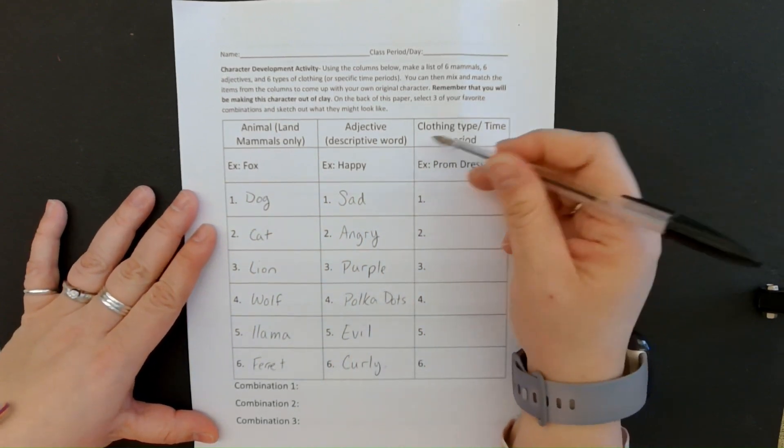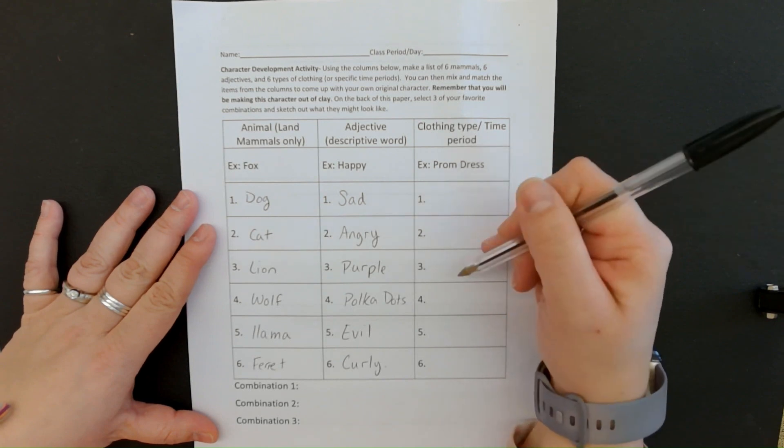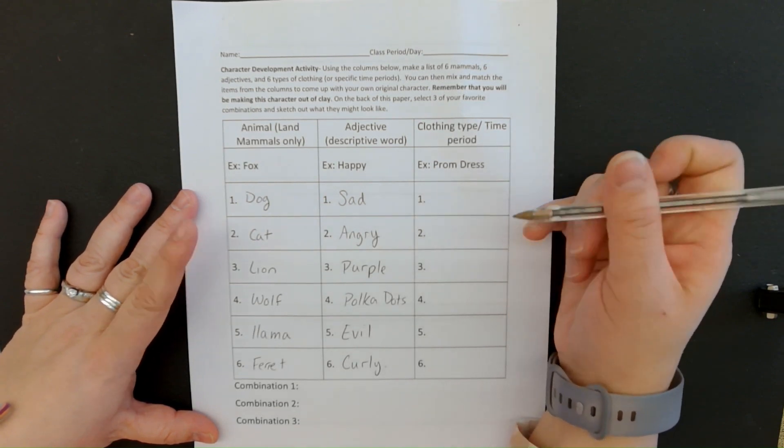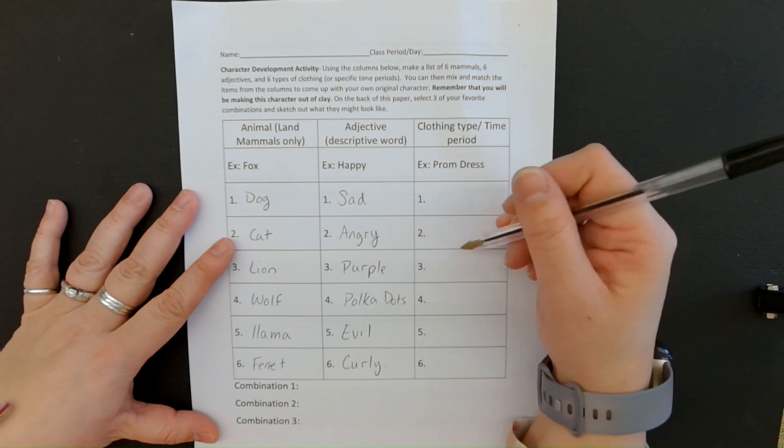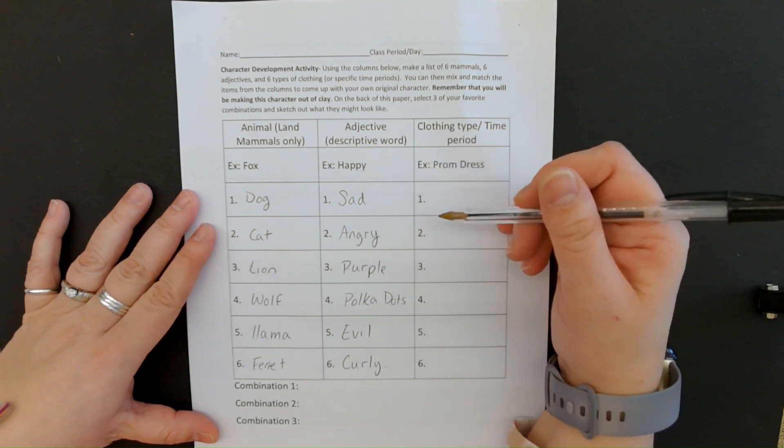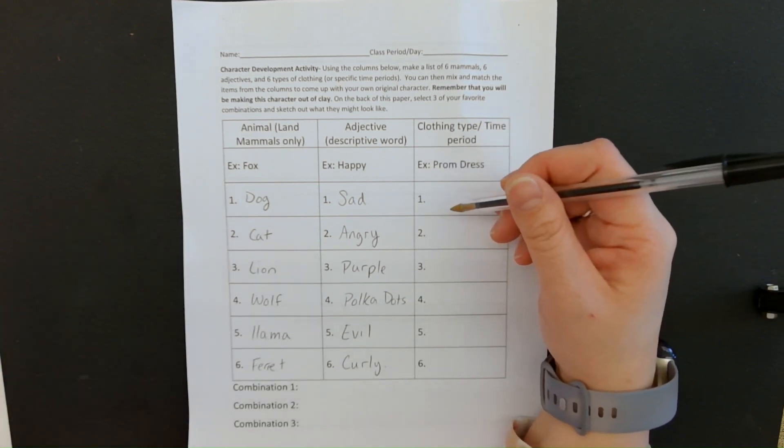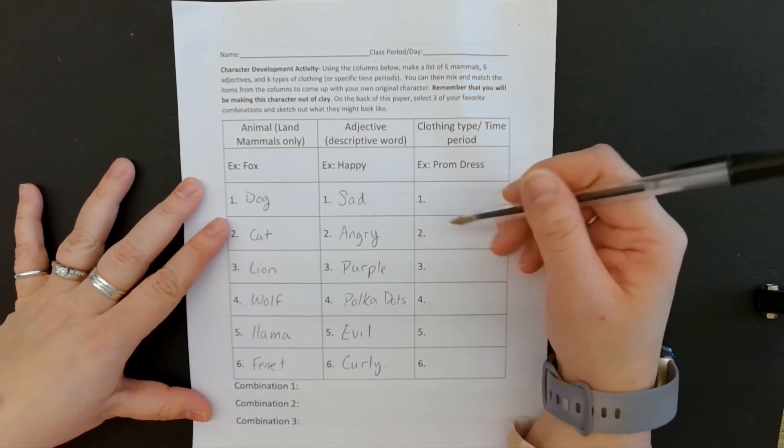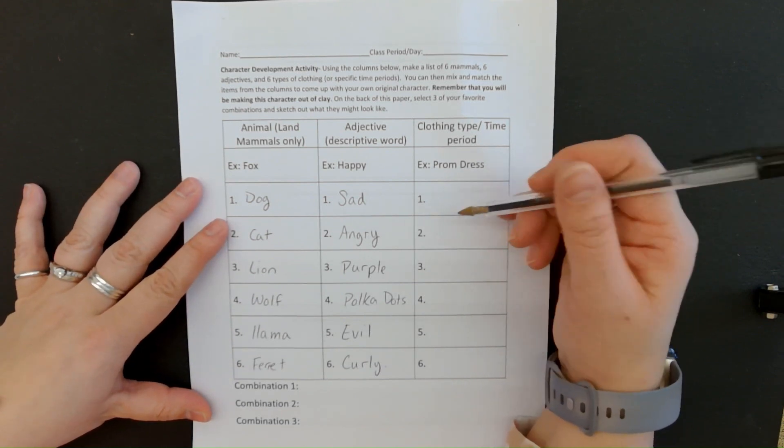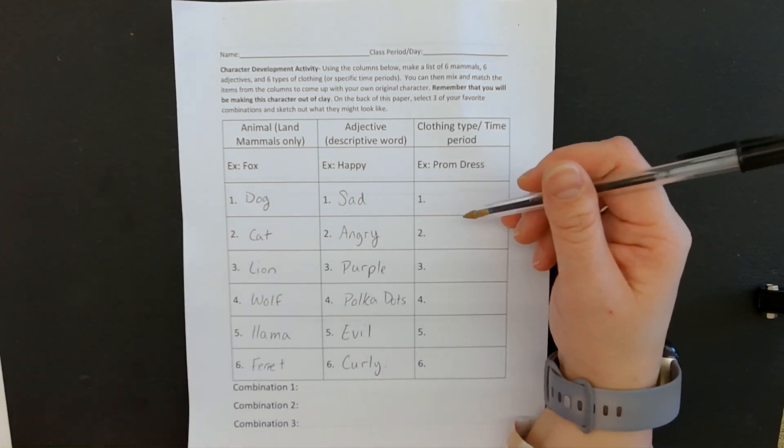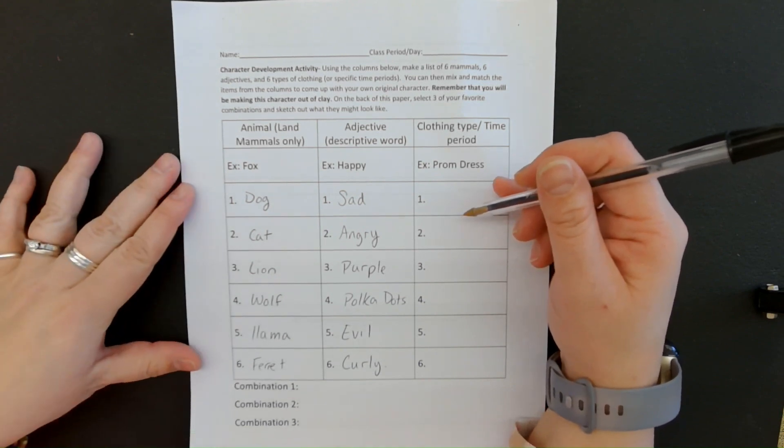And then the last one here, you're going to pick a clothing type or time period. So you could just make a list of different types of clothing, like a shirt, a hat, tuxedo. You could also do a time period of clothing. So you can do like the sixties. So it'd be like tie dye. You do eighties, nineties with neon. You can do the seventies, like a disco kind of a thing.